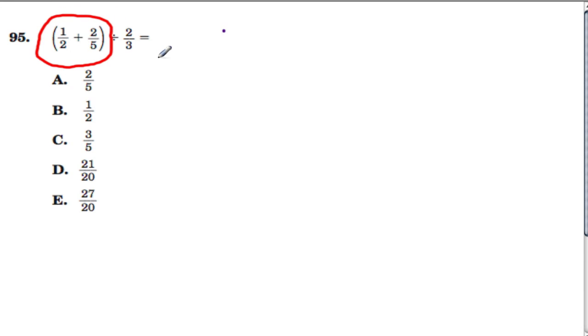I'll solve the fractions in the parentheses first, and I'm going to rewrite them in terms of tenths. So a half is 5 out of 10, and 2 fifths is 4 out of 10, and now I can add these two fractions.